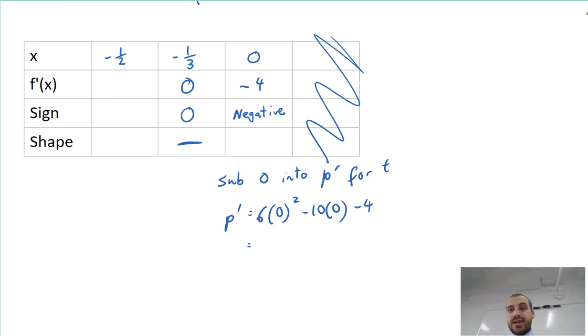If something has a negative gradient, which is what the derivative function is, it's going to look like this. It's going to be like skiing downhill. Now we can test this other one.